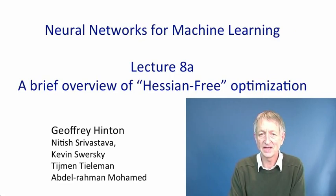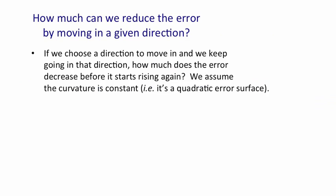In this video, I'm going to give a brief overview of the Hessian-free optimizer that can be used to train recurrent neural networks very effectively. This is a very complicated optimizer, and I don't expect you to get all the details of it from this video. I just want you to have a general feel for how it works, and then in the next video we'll see how well it does on an interesting problem.